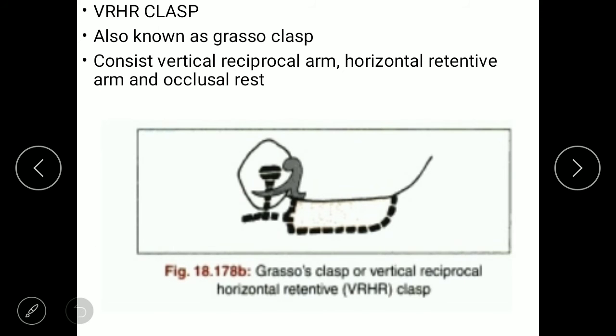The eleventh type is the VRHR clasp — Vertical Reciprocal Horizontal Retentive clasp, also known as the Grasso clasp. It consists mainly of a vertical reciprocal arm, a horizontal retentive arm, and an occlusal rest.